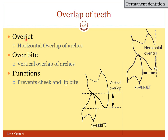Overjet is the horizontal overlap of the arches — how much horizontal distance is there between the labial surface of the mandibular incisors and the incisal ridge of the maxillary teeth. This is called overjet. In Class 2 cases, the overjet is higher. The vertical overlap, on the other hand, is called overbite. Overjet and overbite are important features which allow for the motion of the mandible during mastication, speech, etc. They also prevent cheek and lip bite.